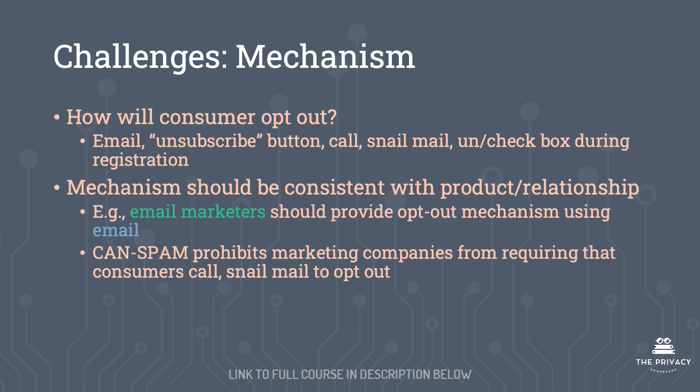Another challenge is mechanism. When thinking about mechanism, we need to consider how the consumer will opt out. For example, are we going to send them an email with an unsubscribe button at the bottom? Or perhaps on a website there's a place for them to click to unsubscribe. Must the consumer be required to call in, send snail mail, or check/uncheck a box during registration? Those are all various examples of mechanisms.